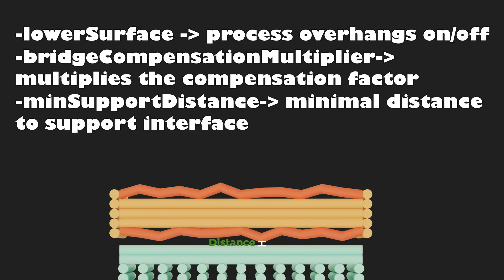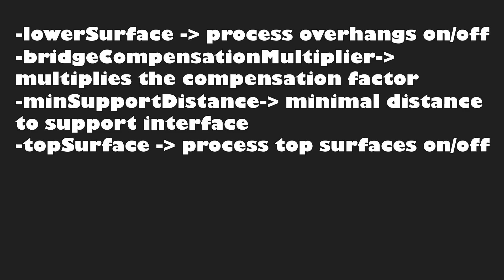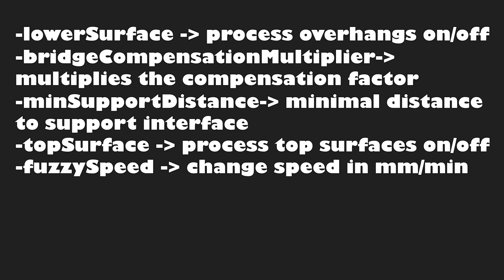Two other additional parameters I've added are: -TopSurface followed by 1 or 0 to turn on or off whether the top layer should get Fuzzy Skin; and -FuzzySpeed followed by a number, which allows you to change the print speed of the Fuzzy Skin in millimeters per minute.